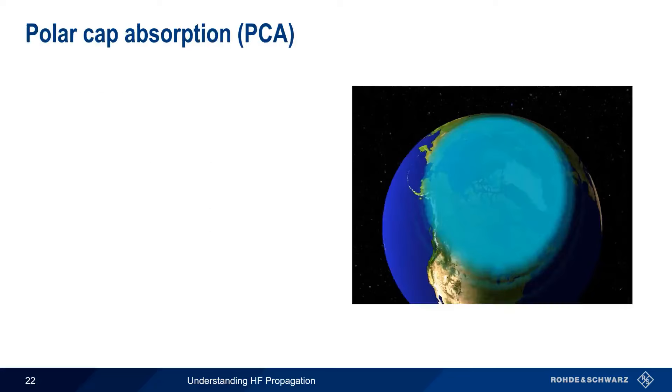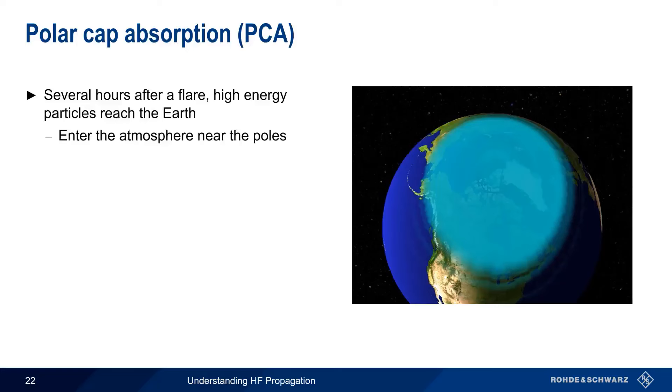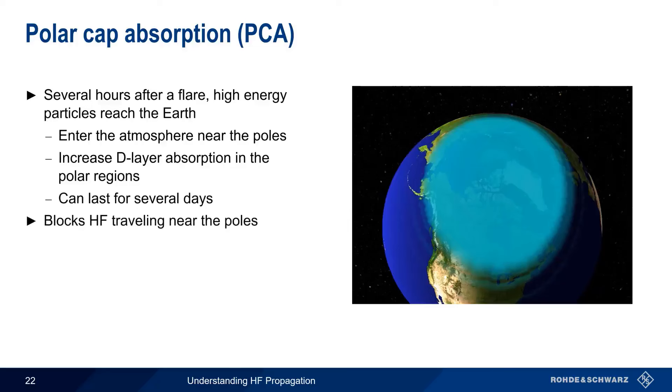The next effect of a solar flare is something called polar cap absorption. The high-energy particles emitted by a flare reach the Earth several hours later, and the Earth's magnetic field prevents them from entering, except at the poles. When they enter the atmosphere, these particles can increase d-layer absorption in the polar regions, and this effect can last for several days. During this time, HF signals traveling through or near the poles will be blocked by this increased attenuation, but paths that do not go near the poles may remain relatively unaffected during this event.